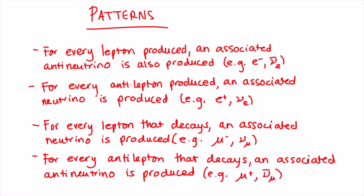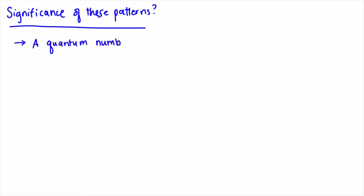So when I say associated neutrino or antineutrino, I mean the neutrino or antineutrino that belongs to the same family as that charged lepton or antilepton. Okay, so what does this pattern potentially mean? Well, let's take muon decay for example.